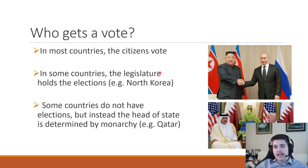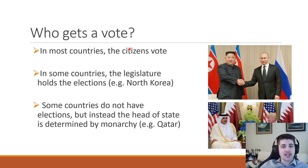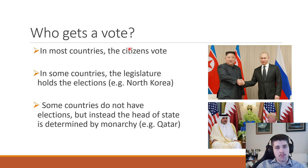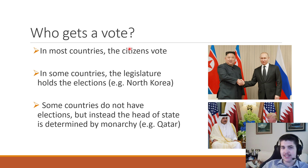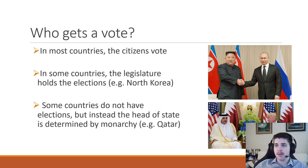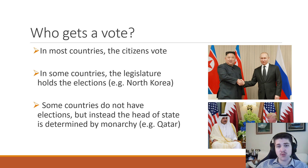Some countries don't even have elections for their officials — they just have a head of state determined by monarchy, and the people who are in charge stay in charge. There are a lot of different systems, but we're going to be focusing on a system similar to our country, where all citizens get a vote. Like if I were figuring out what type of pizza to get for class, I'd want to make sure every one of you got a vote. Obviously everyone getting a vote is important. In the next video I'll talk about what a preference schedule looks like and how to read one.